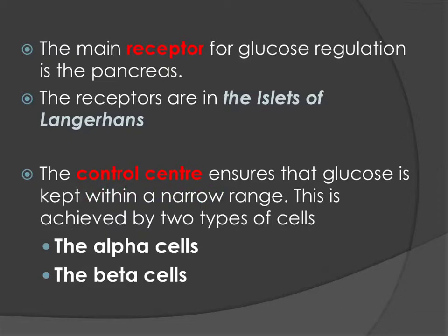The control center is the part that is going to make sure blood glucose levels are maintained at a pretty regular set point. They're actually only allowed to deviate by about 20%, so that's not very big. There are two types of cells that act as the control center. These are called alpha cells and beta cells, and they are both within the islets of Langerhans.